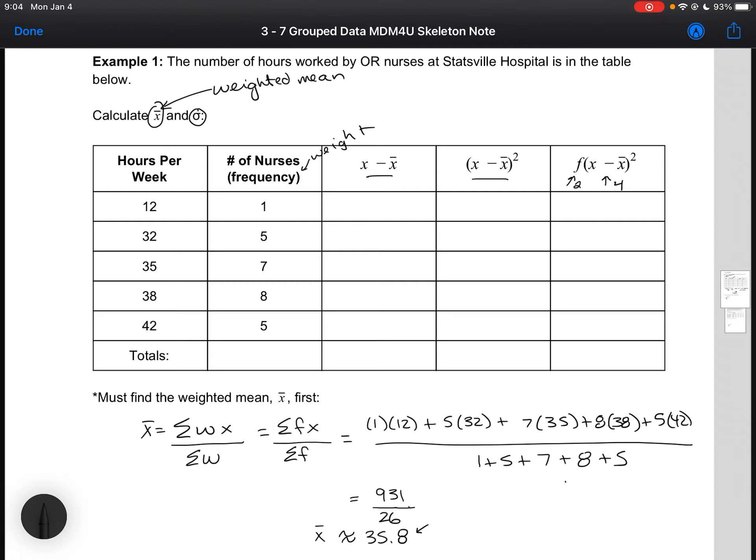So let's go ahead and fill out the table. So we've got x minus x̄, so 12 minus 35.8. And we can continue on down the table. Just like in the standard deviation video, what you might want to do is pause the video, see if you can fill in the table by yourself, and then double check to make sure that you are getting the same values.